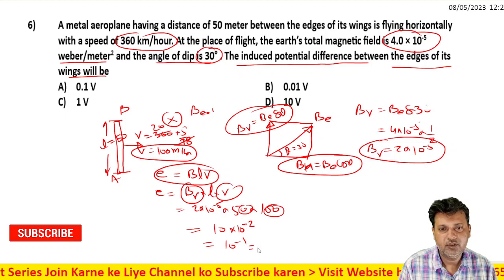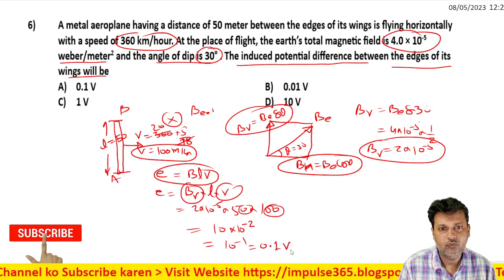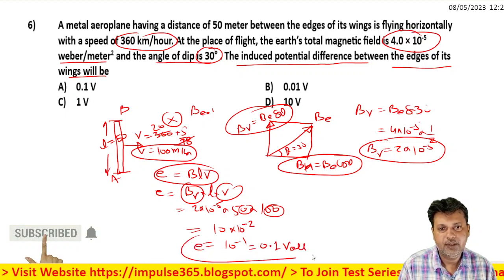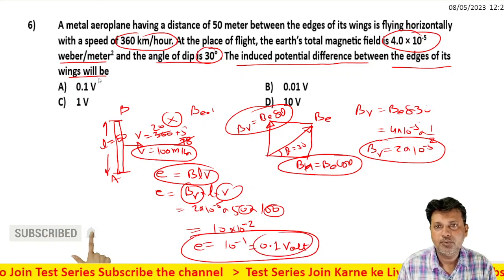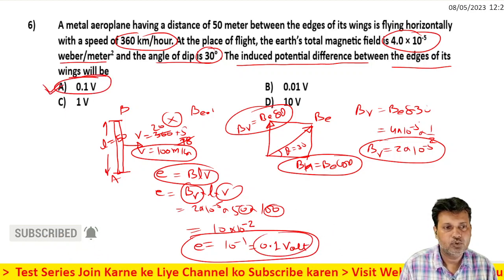This equals 0.1 volt. The EMF potential difference is 0.1 volt, which matches option C.